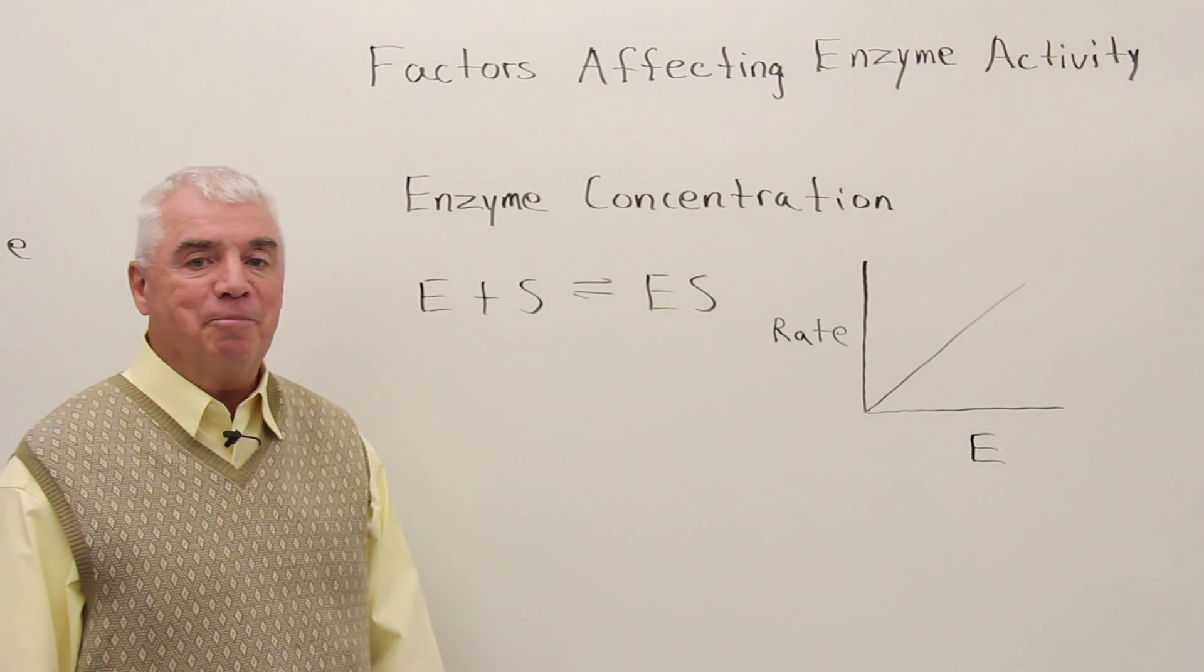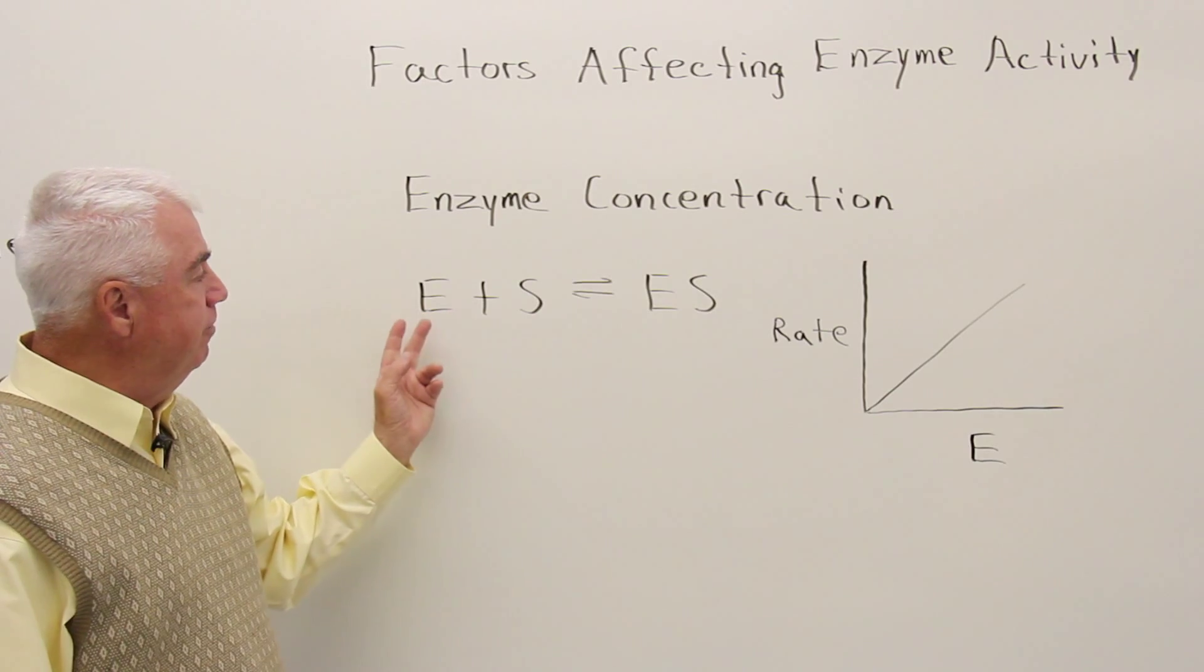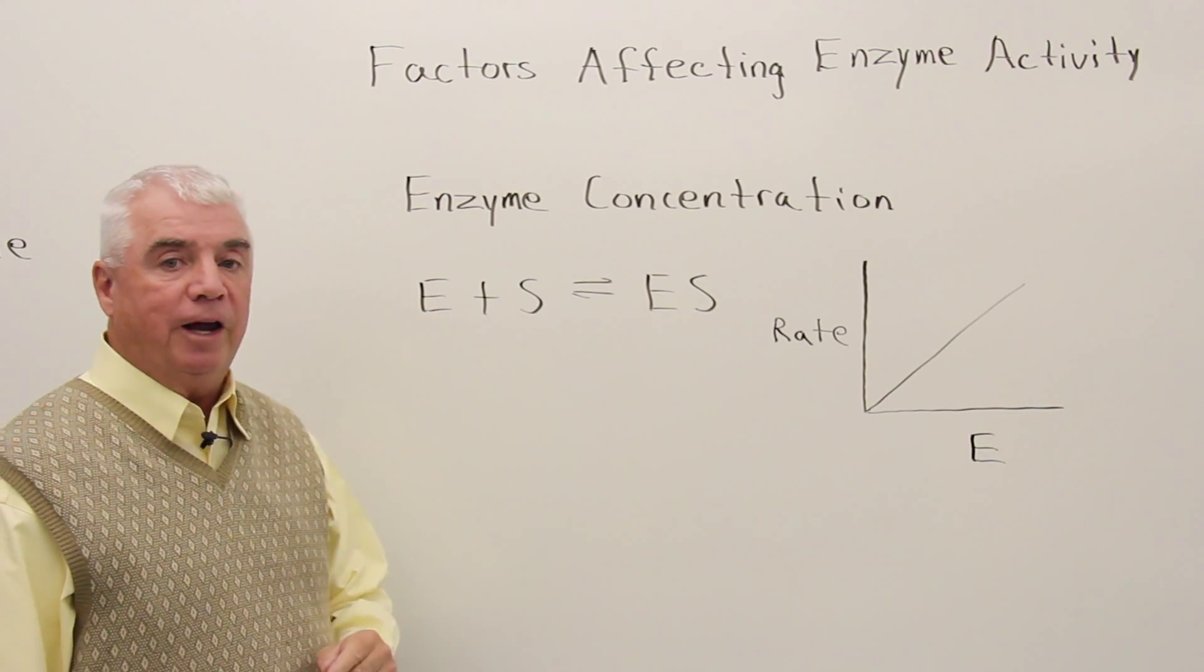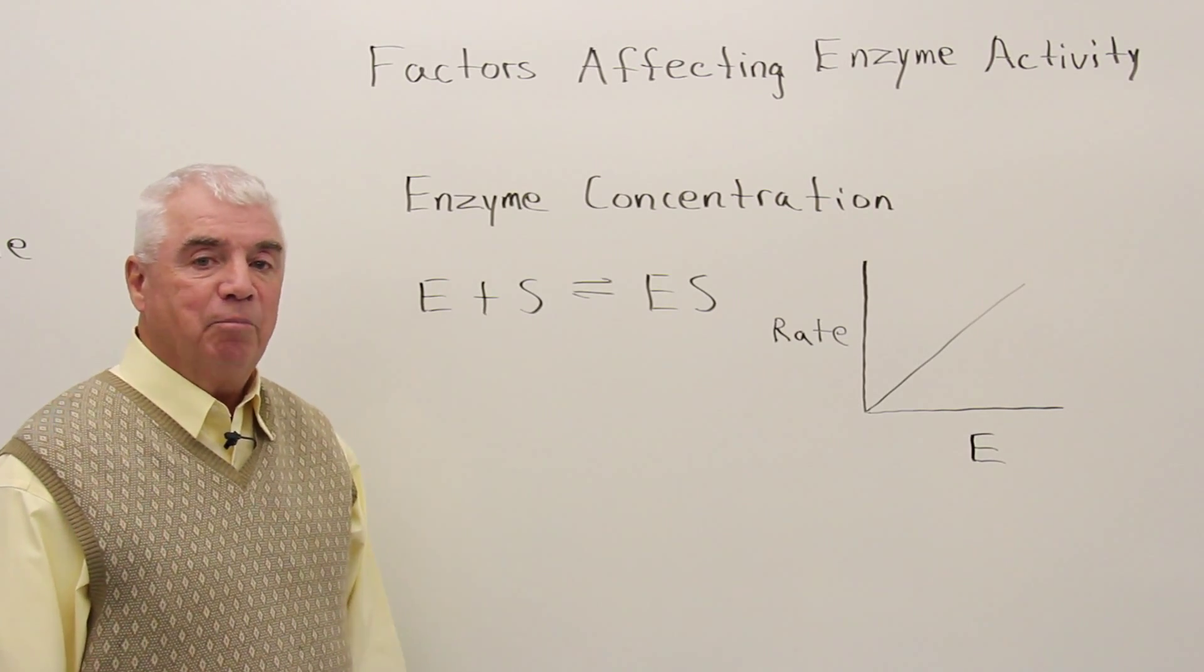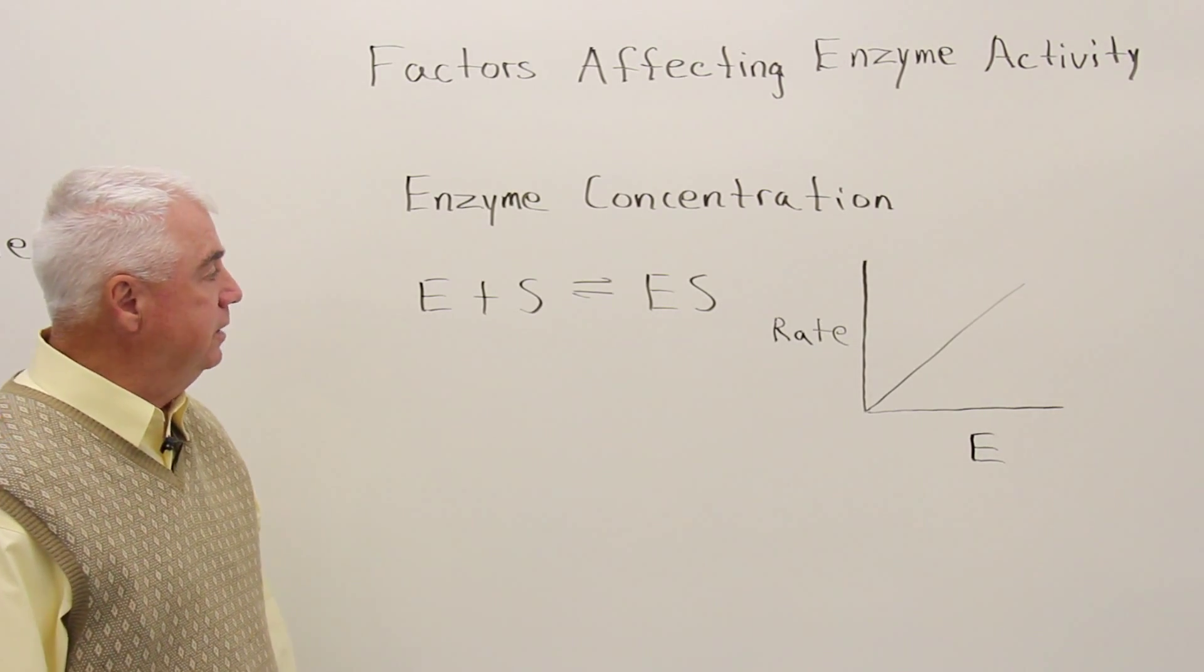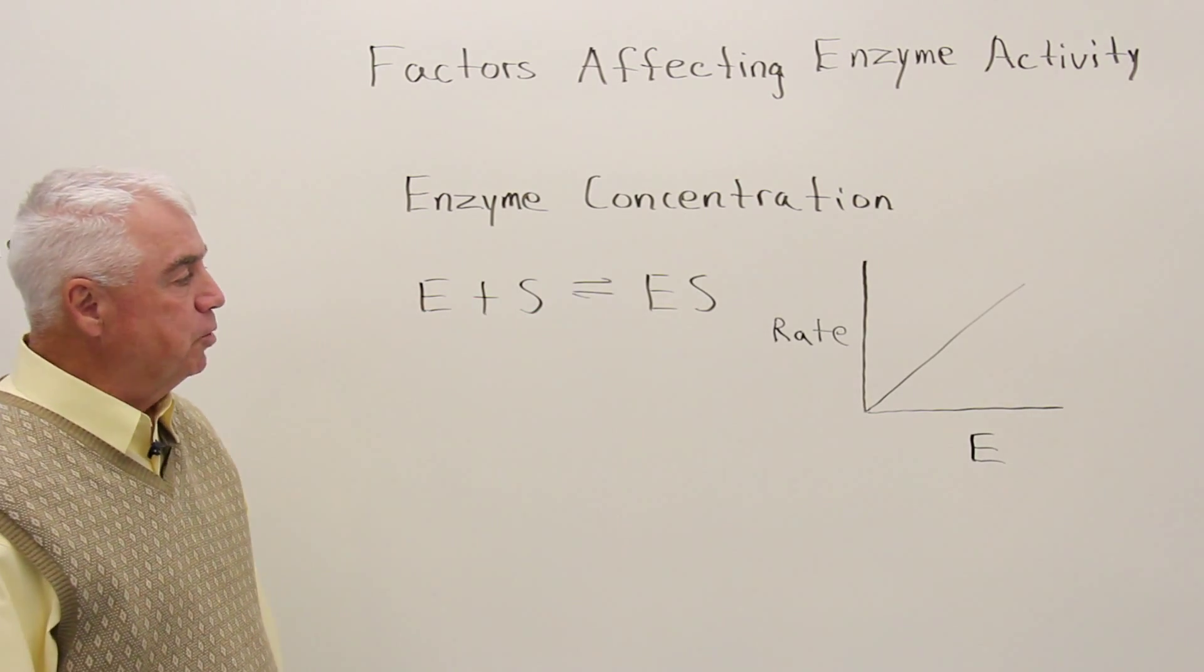The first of these is enzyme concentration. We know that it's necessary for the enzyme and substrate to come together to form a complex, and then that complex breaks down and gives us product. So it makes sense that we need both enzyme and substrate there.